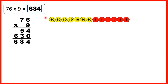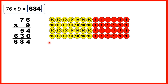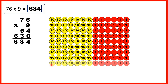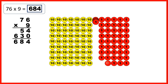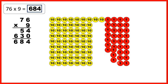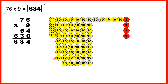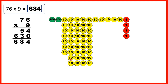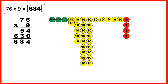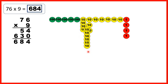Then we had 76, so 7 tens and 6 ones, and we were multiplying by 9. So we can show what we have nine times. Now we can regroup our ones, because 10 ones counters has the same value as 1 ten. And now we can regroup our tens, because if we have 10 tens, that's the same as 100. So now that we've regrouped as much as we can, we have 6 hundreds, 8 tens and 4 ones. So that's 684.